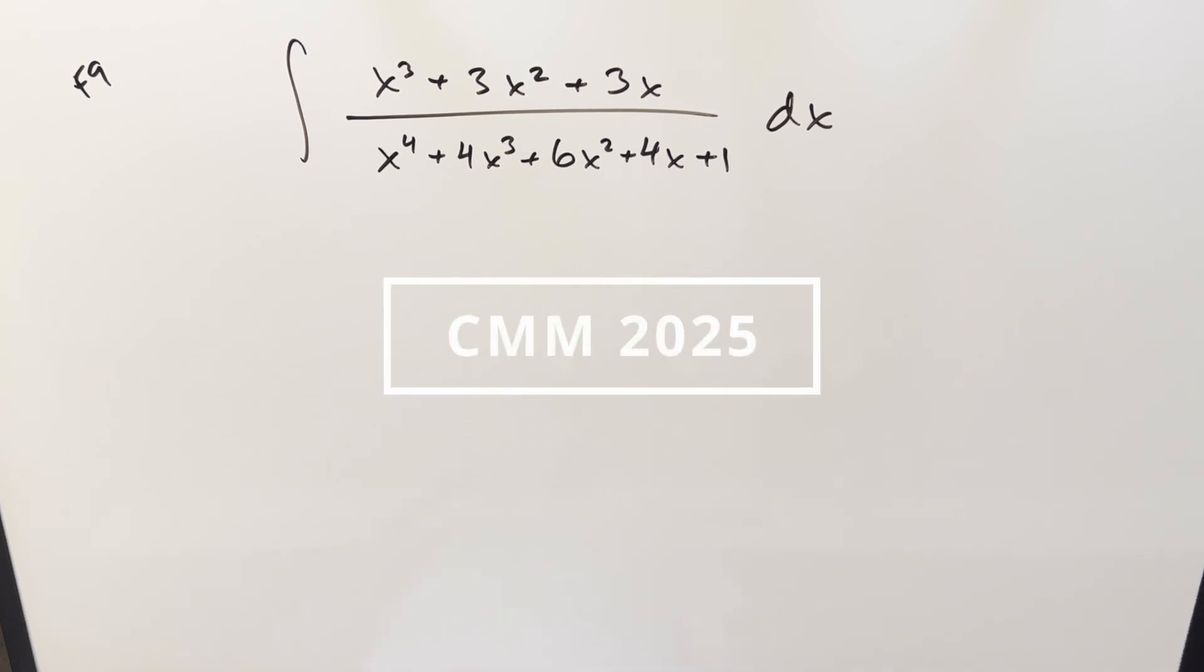We have another integral from the Caltech Math Meet 2025, finals number 9. We have the integral of x³ + 3x² + 3x over x⁴ + 4x³ + 6x² + 4x + 1 dx.